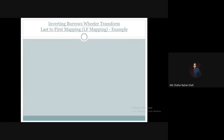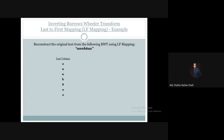Hello, welcome to the advanced algorithm course. In this tutorial we're going to see a worked-out example of how to apply the LF mapping to invert a given Burrows-Wheeler Transform. Suppose we have a Burrows-Wheeler Transform of a text — this is the answer — and we want to reconstruct the original text using LF mapping.